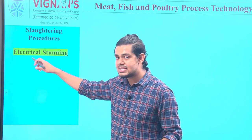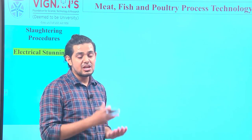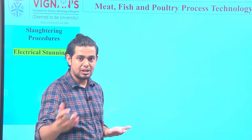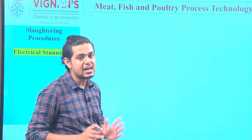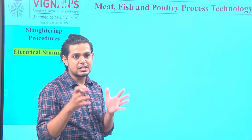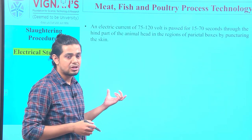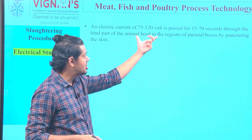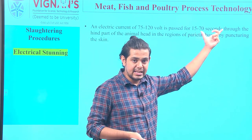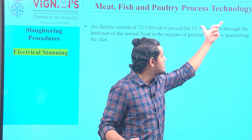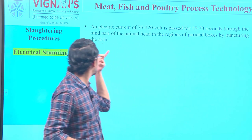The electrical method of stunning works by passing electrical current to an animal at a specific voltage depending on its size — whether it is a large animal, small animal, or bird. The animal is exposed to a specific voltage for a limited duration of time. Electrical stunning employs a current of 75 to 120 volts for a period of approximately 15 to 70 seconds, depending on the type of animal.